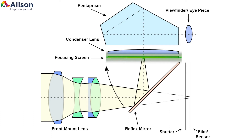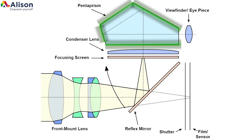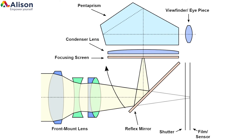The focusing screen: light is reflected here, and it was more important back in the days of film before the advent of autofocus. The condenser lens helps to funnel the light into the pentaprism. The pentaprism is optical glass which reflects the light around and into the eyepiece. The eyepiece, as the name suggests, allows you to see the scene.